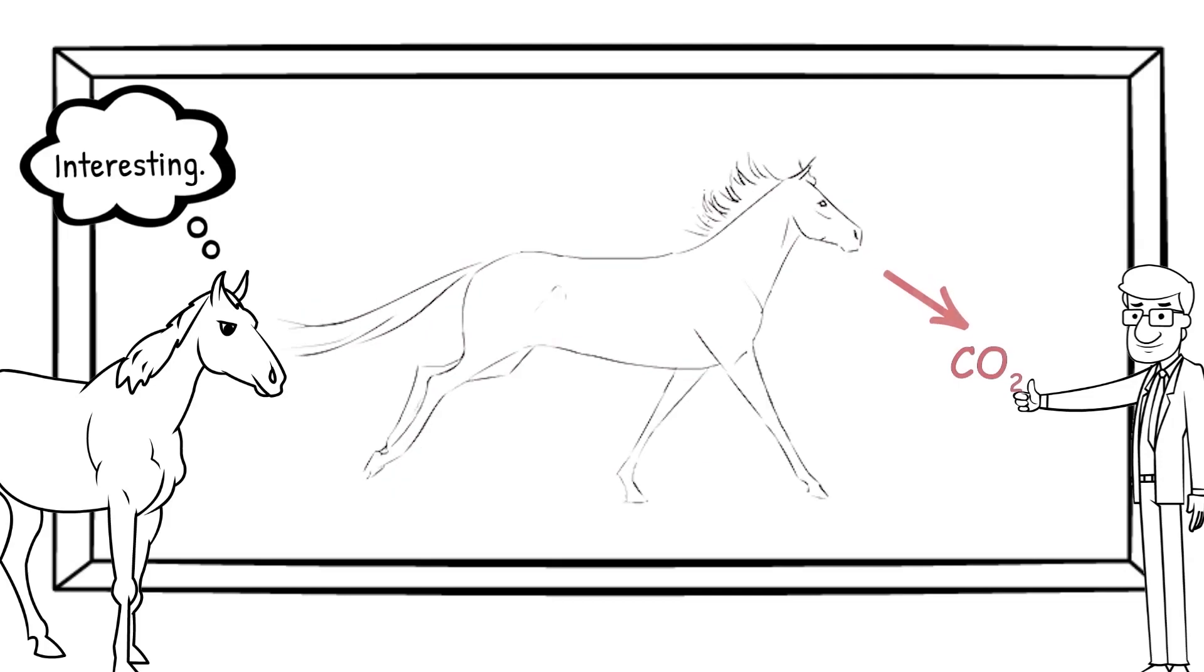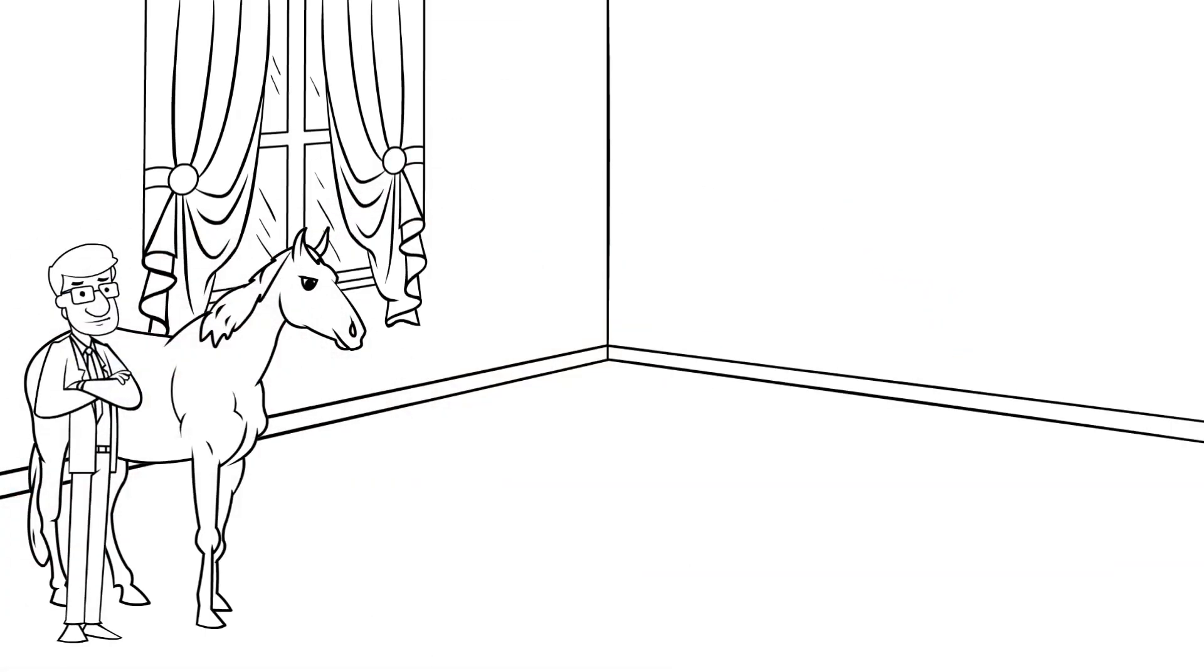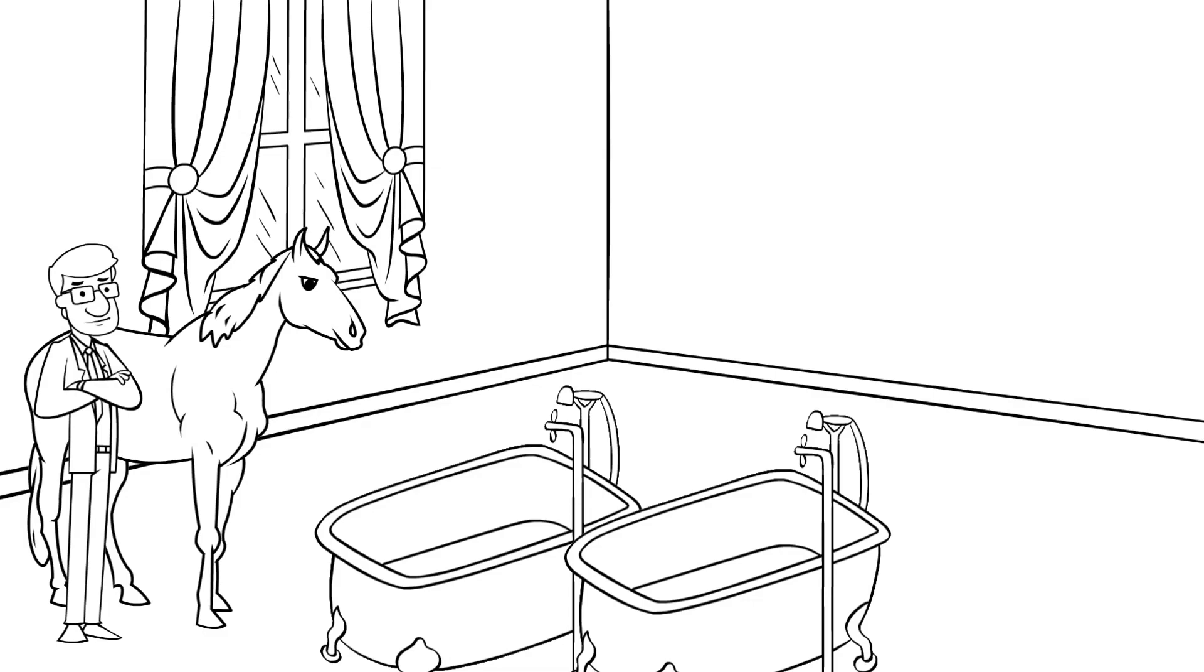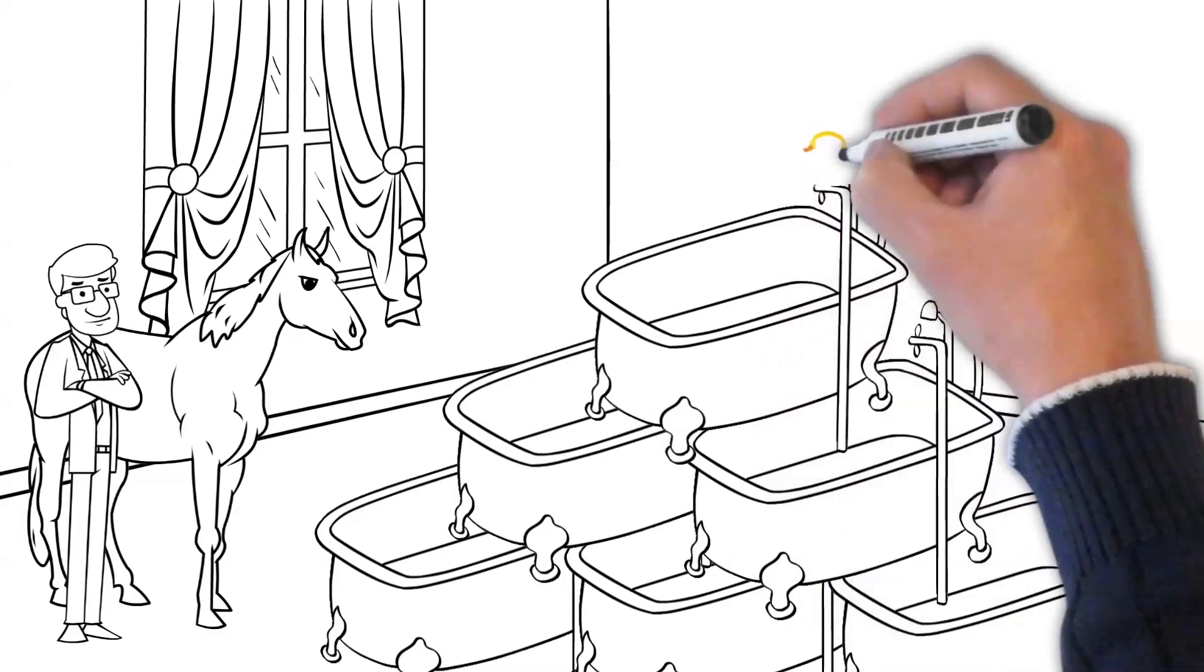To do so, the horse breathes deeper and faster. When galloping fast, a horse moves about 6 bathtubs of air into and out of its lungs every minute.